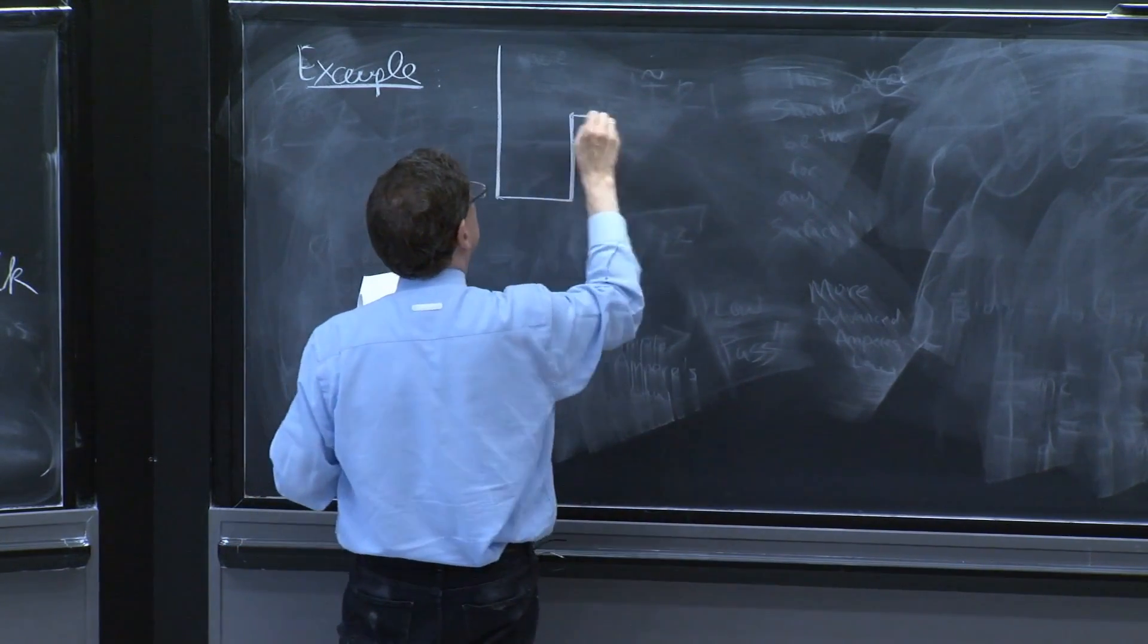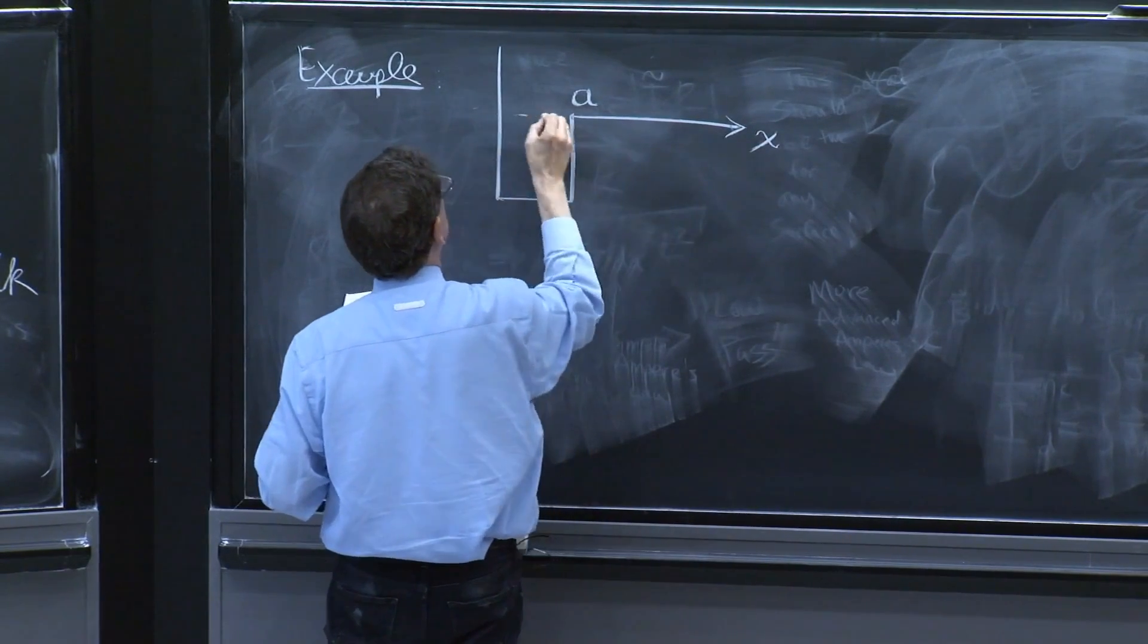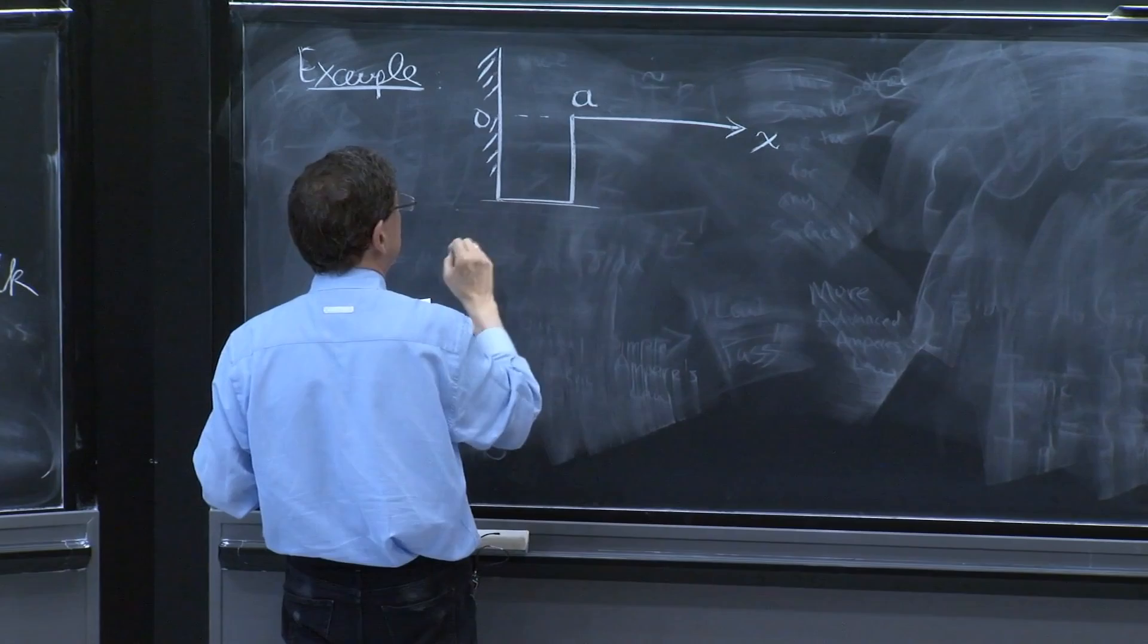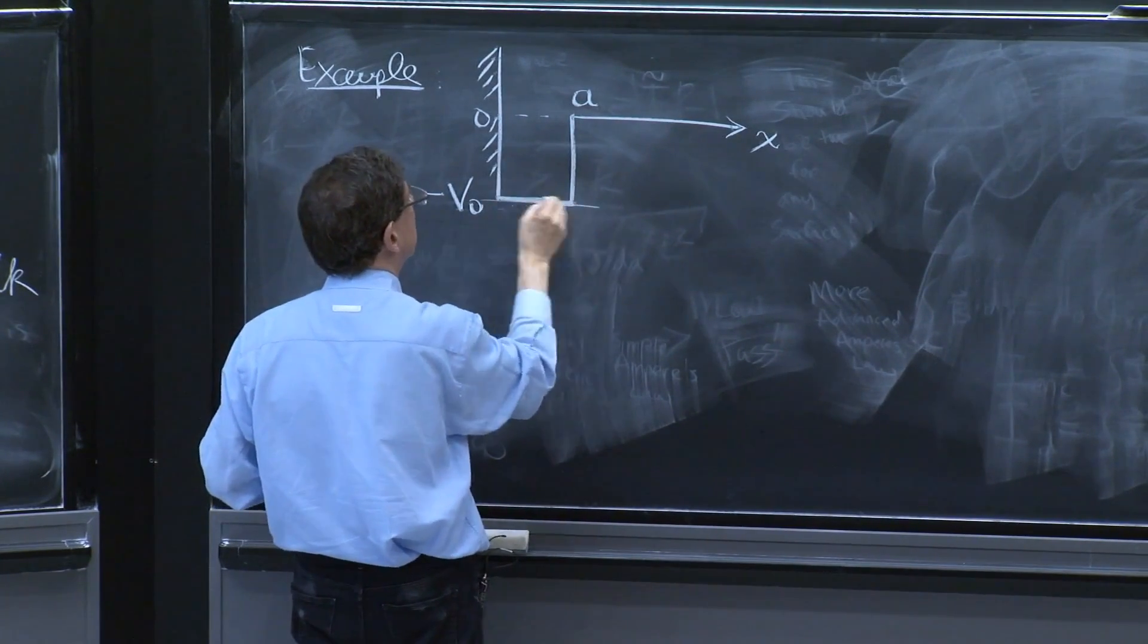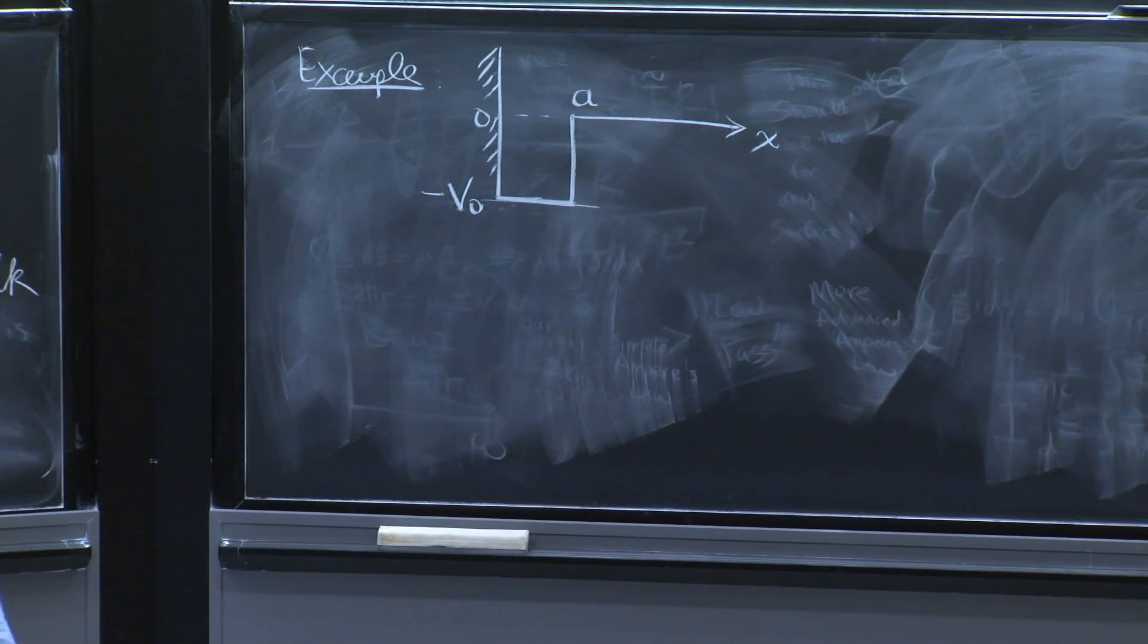We have a potential up to distance a. Here is 0. The wall is always there. And this number is minus V0. So it's a well, a potential well.